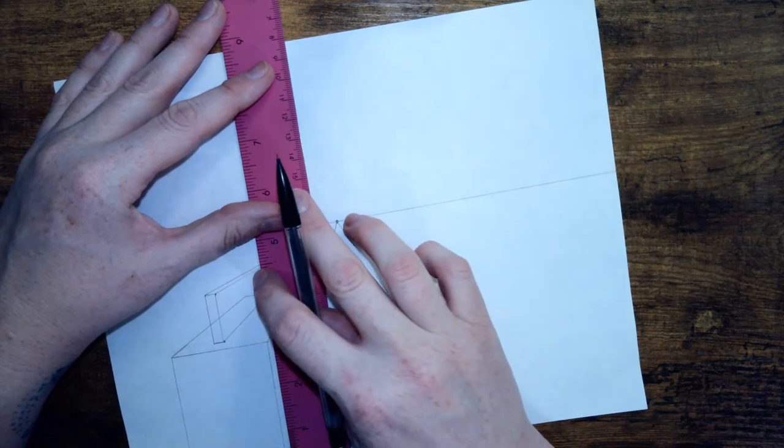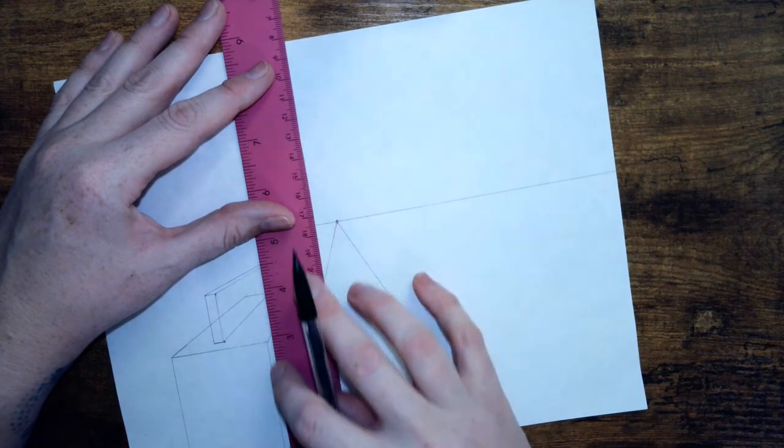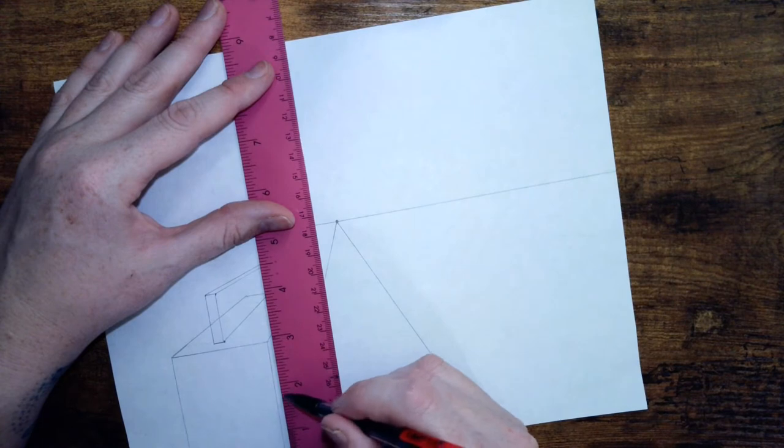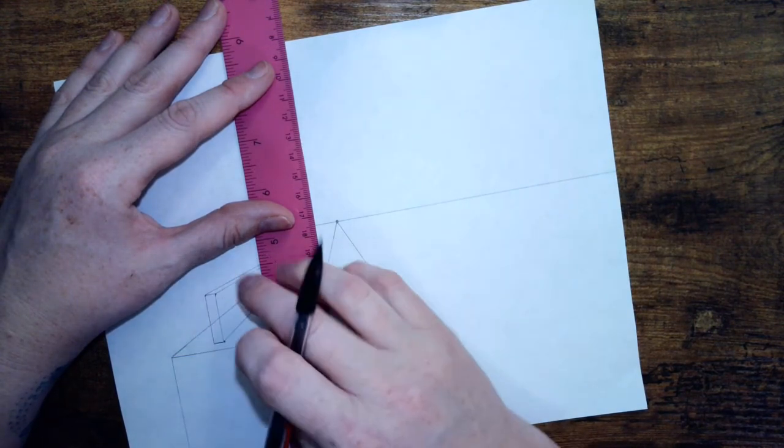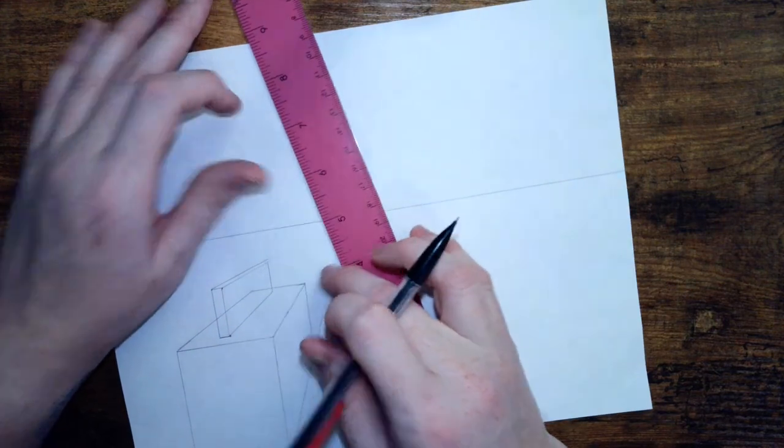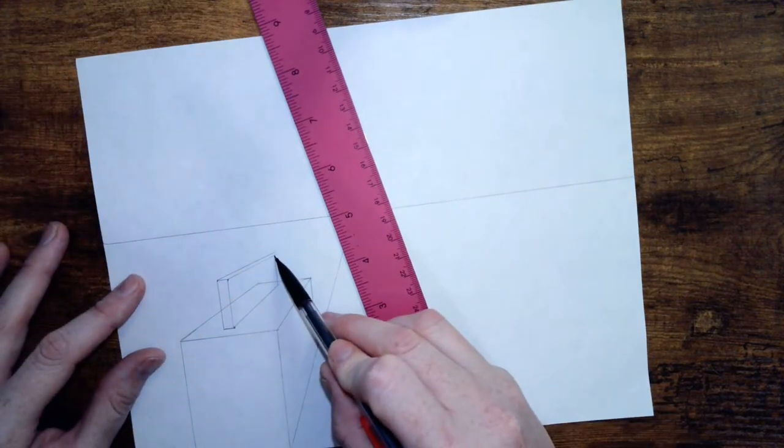Now I need to make sure that back line is parallel by looking and comparing down here. I can draw a line straight up, only to that middle line, and stop. So I only went up to that first line.